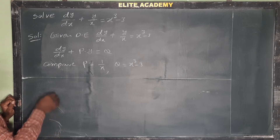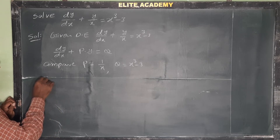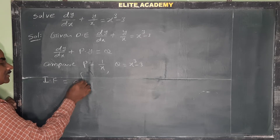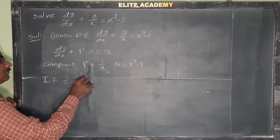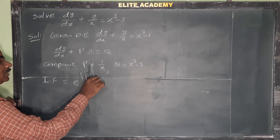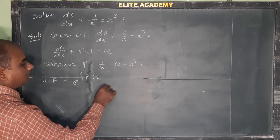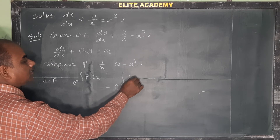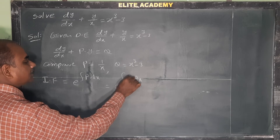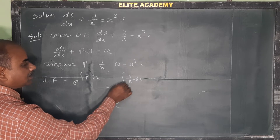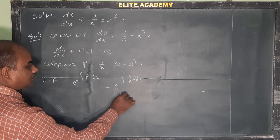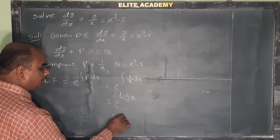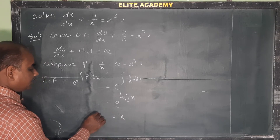Next, we need to find the integrating factor. The integrating factor is e to the power of integral of P dx, which is e to the power of integral of (1/x) dx. Integral of 1/x dx is log x, so e to the power of log x gives us x. Therefore, the integrating factor (IF) is equal to x.